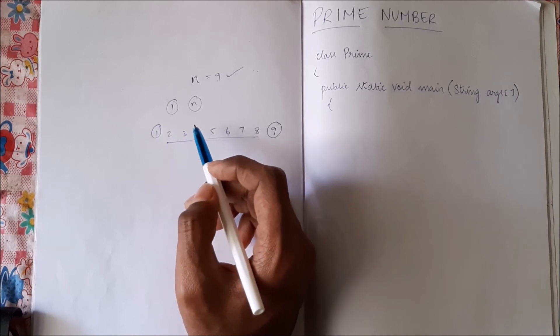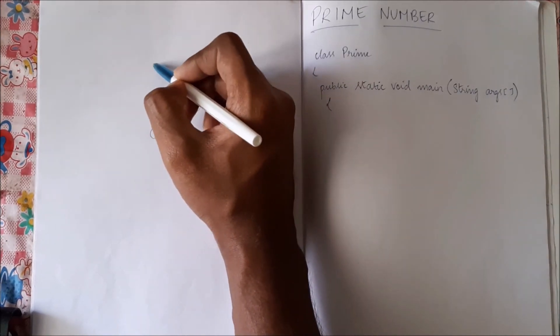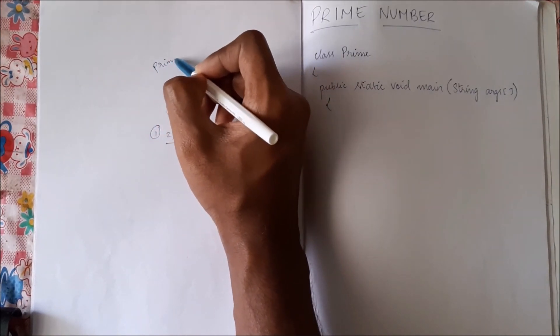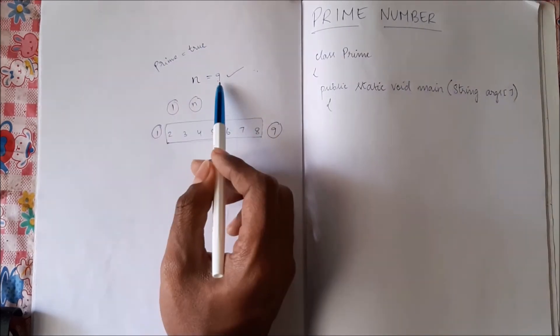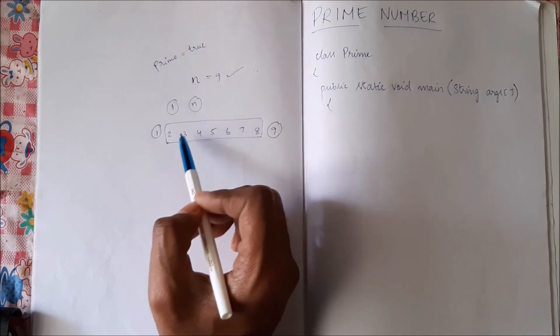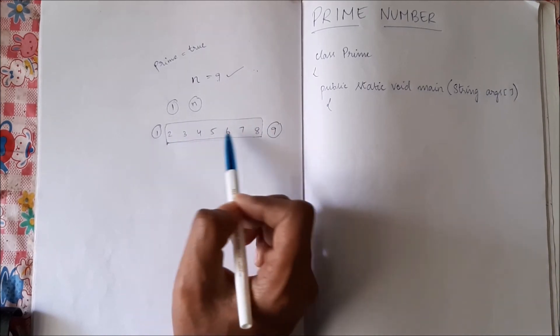So initially let us assume n is prime. Let us say there is a variable we say it is prime. Let us see if 9 is divisible by any number between 1 and 9.